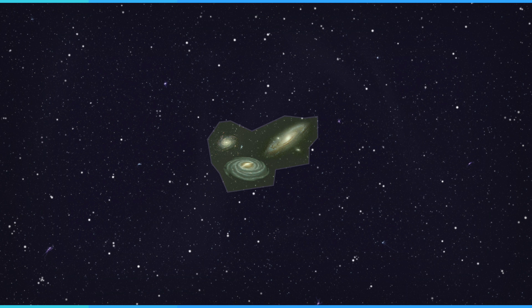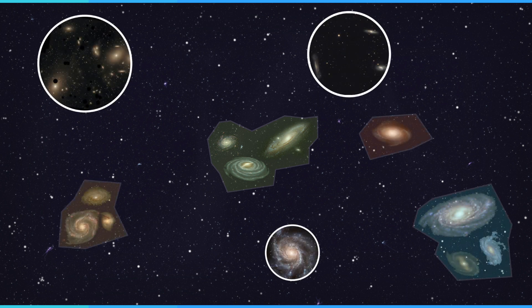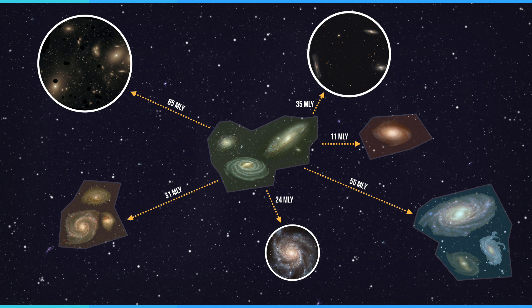This collective structure is also part of a larger structure, a number of nearby groups and clusters that make up the Virgo supercluster. This stretches over hundreds of millions of light years and is just one of many superclusters in the known universe.